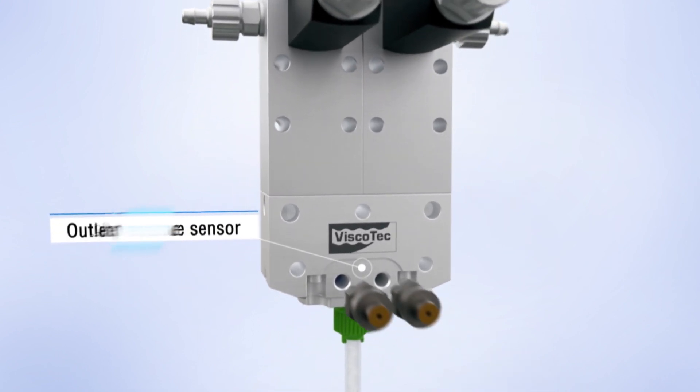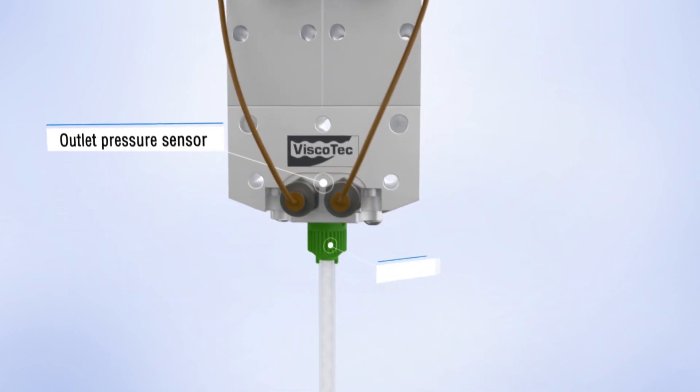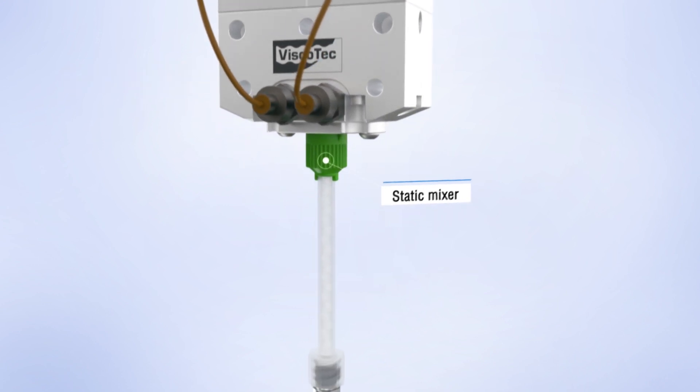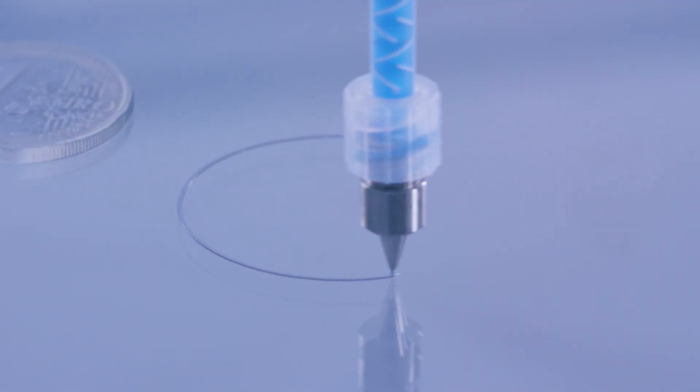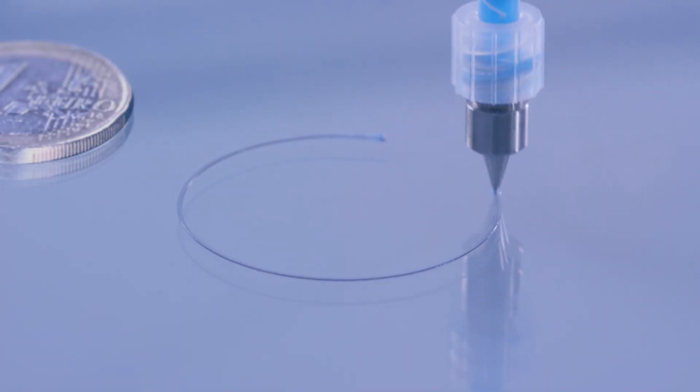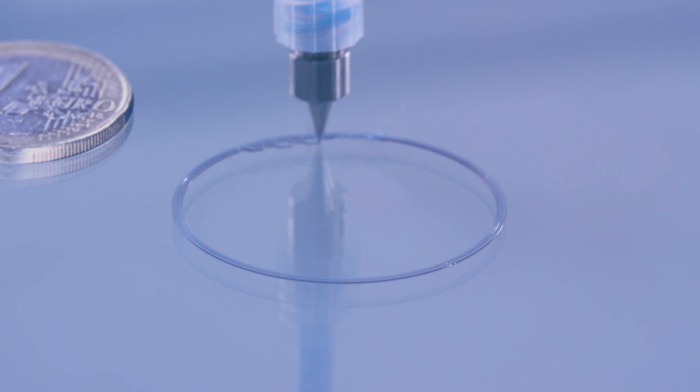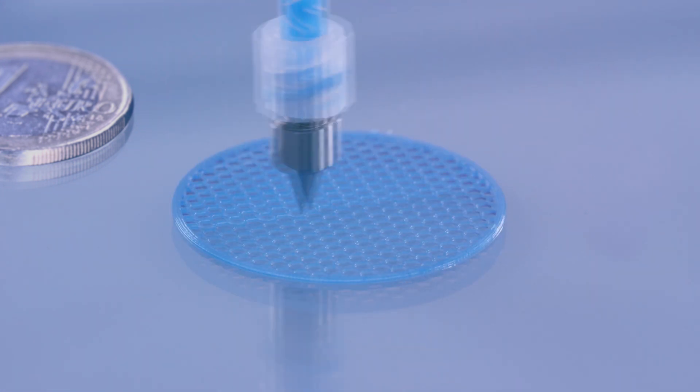The pressure sensor can monitor the printing process and make a safety shutdown if necessary. A wide range of different static mixers are available. The material quantity and printing speed can be individually adjusted and ensure the necessary flexibility in the printing process.